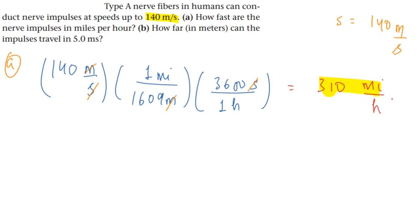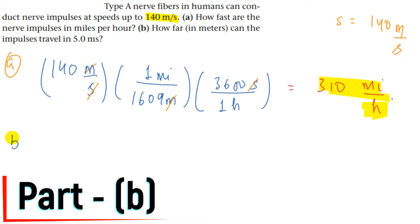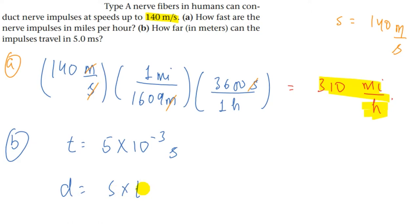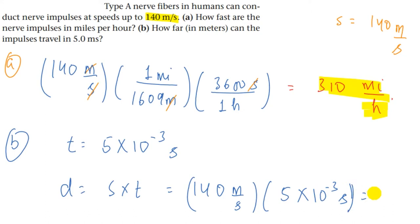Similarly, we solve part B. In part B we have to find how far in meters the impulse can travel in 5 milliseconds. Five milliseconds means 5 × 10⁻³ seconds. Distance is speed multiplied by time, so 140 meters per second multiplied by 5 × 10⁻³ seconds equals 0.70 meters. This is the answer for part B.